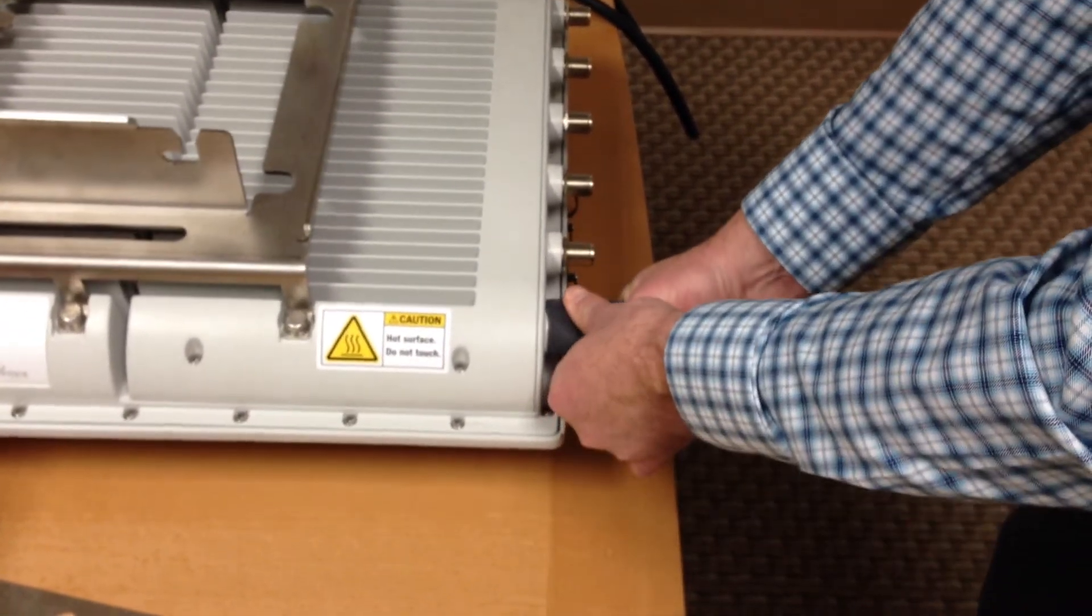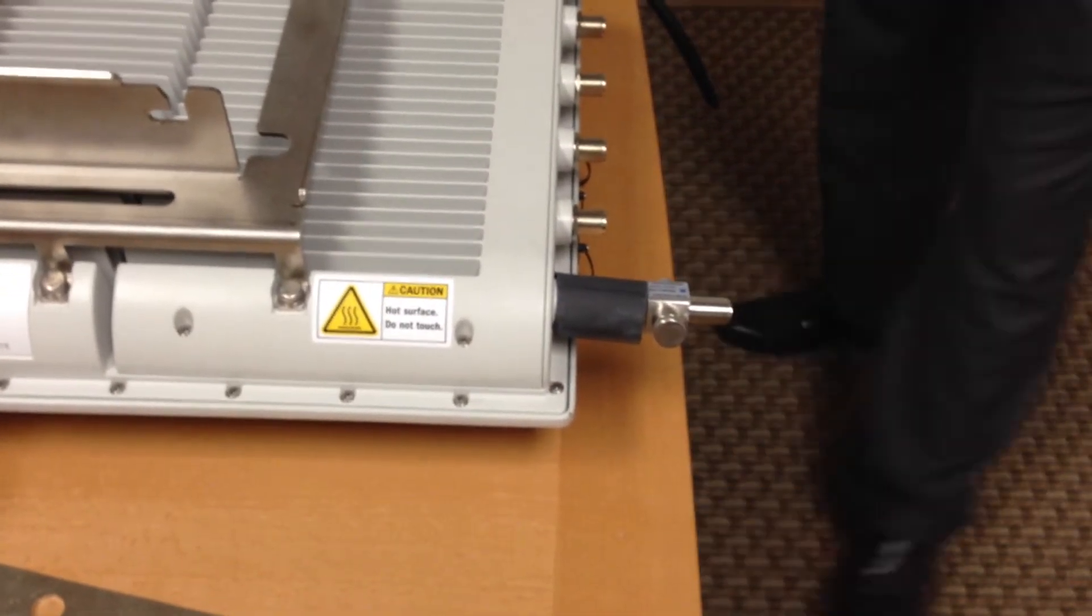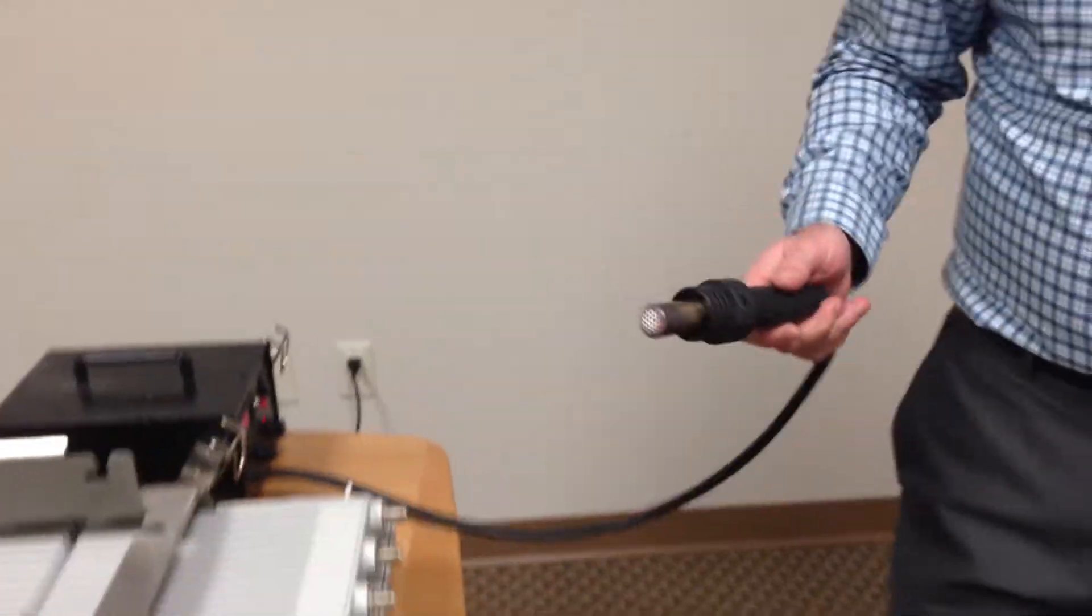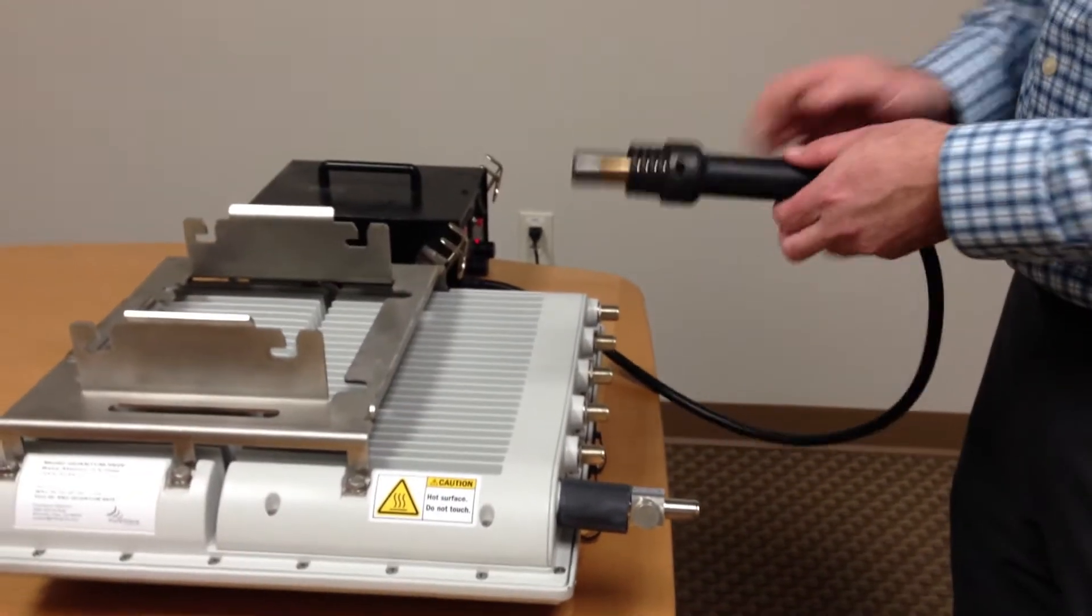Once we have that tight, we can then go ahead and weatherproof that connector with the heat shrink already on. I have here just a blow gun, blow torch, whatever you want to use, a heat gun to seal that weatherproofing strip.